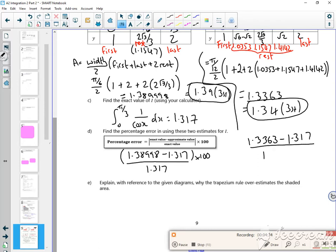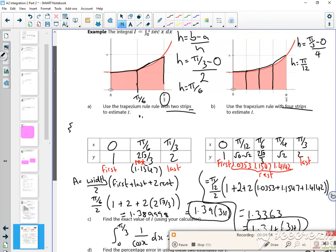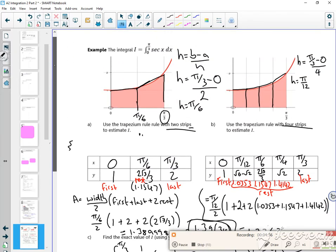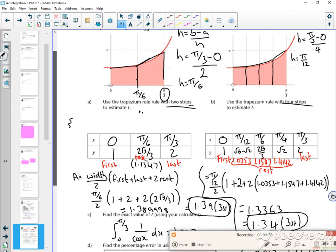In terms of percentage errors, this first one's roughly 5.55%, whereas this one's only 1.45%. So you can see that you've got more accurate. So it says explain why it's an over or an under estimate. Looking at the graph now, this is quite important. I'm going to run out of time!